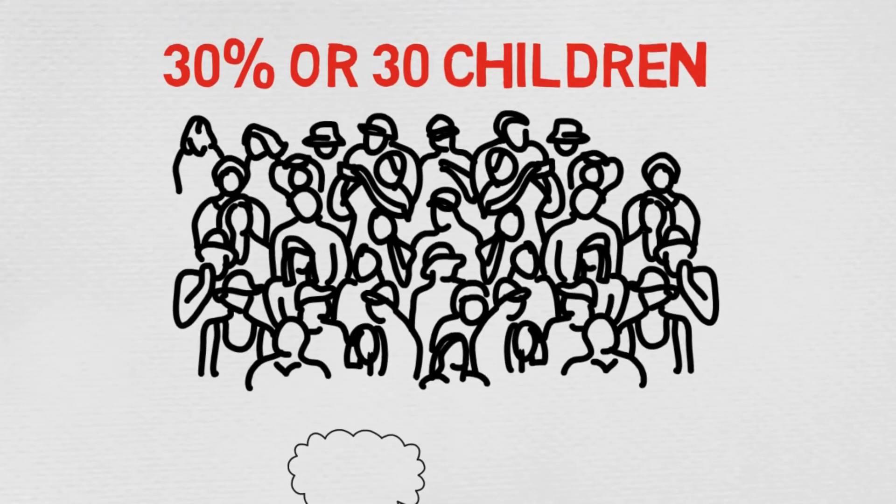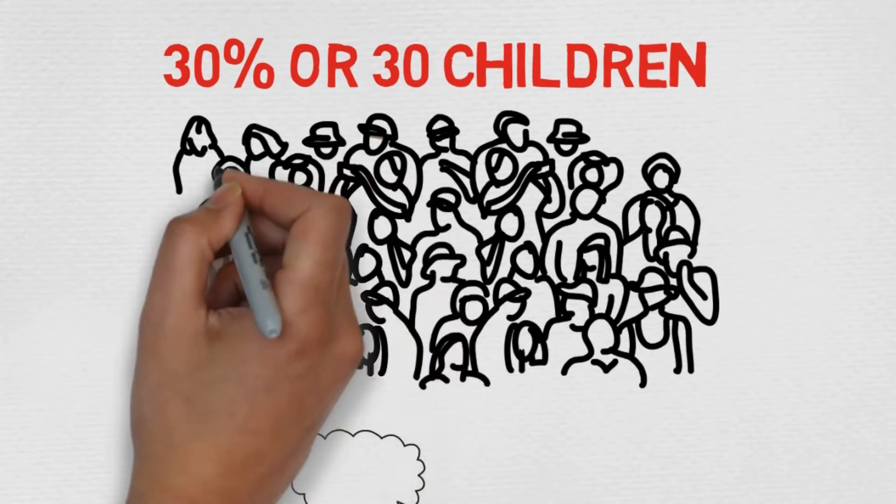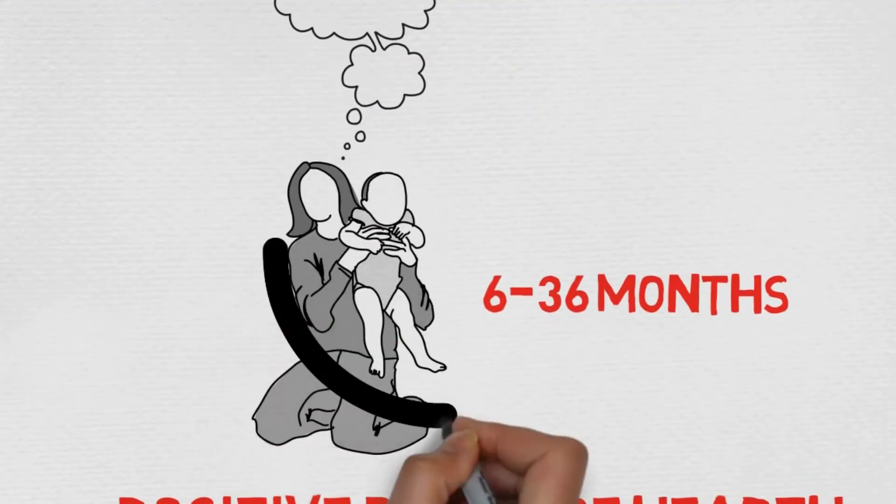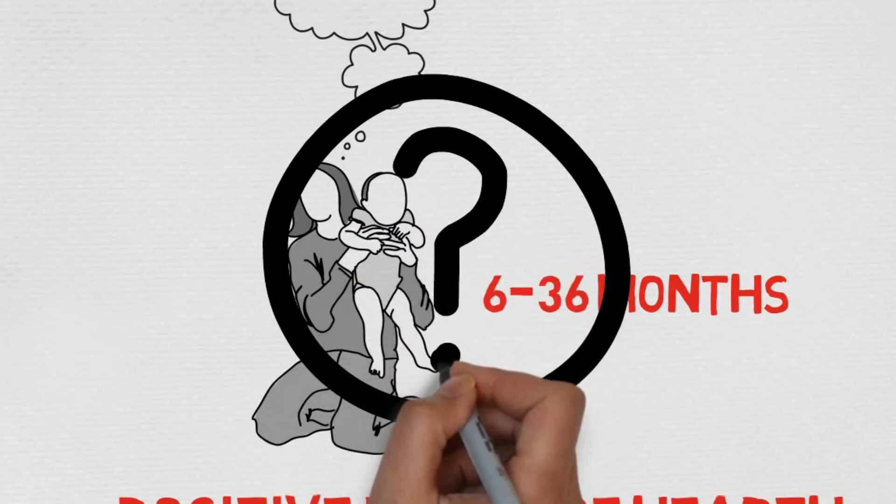These low-cost, positive practices and locally available nutrient-rich foods are then shared with the rest of the community. So, what is Positive Deviance? And what is a Hearth?